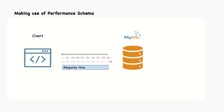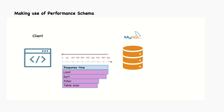This leads to an important principle of optimization: we cannot reliably optimize what we cannot measure. Therefore, our first job is to measure where the time is spent, then reduce or eliminate whatever unnecessary work it's doing to achieve the results.